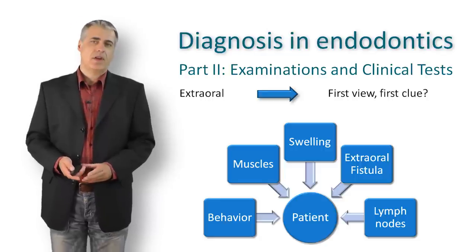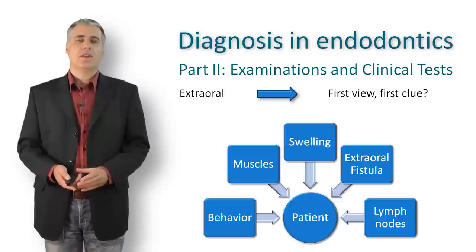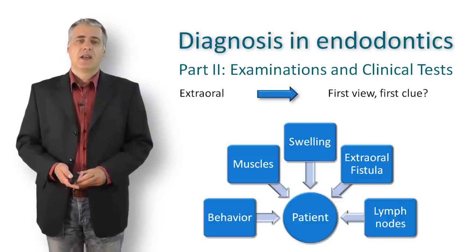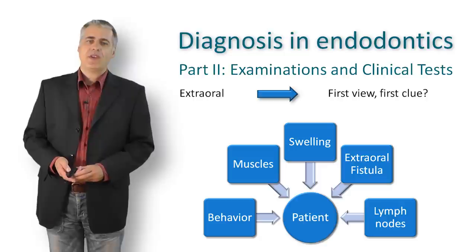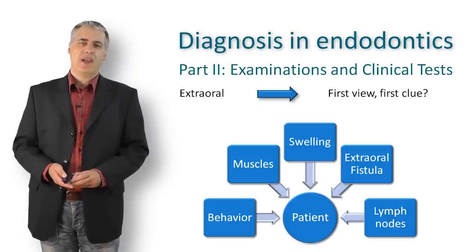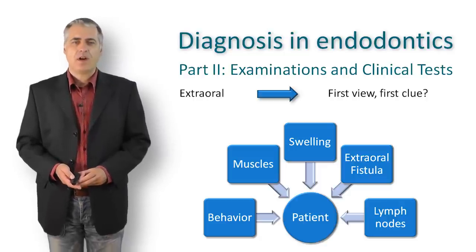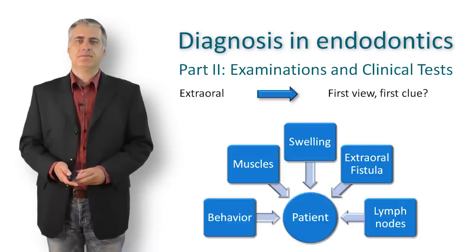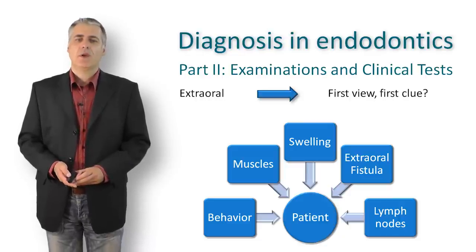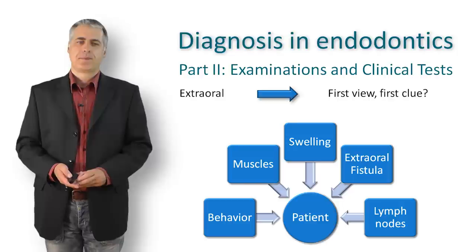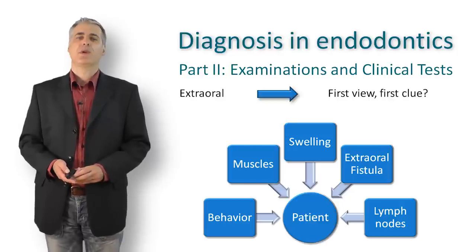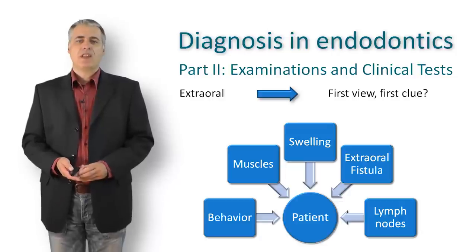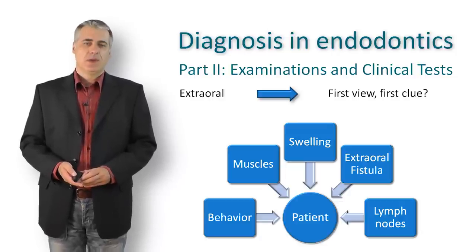At least, have a look at the patient — what do they look like? The facial expression is always a sign of how severe the pain is. A typical and often-mentioned example is the patient who comes in with a bottle of cold water, because the cold water relieves the pain momentarily — a clear sign of apical periodontitis. In addition, a slight swelling may be visible.